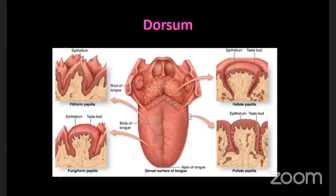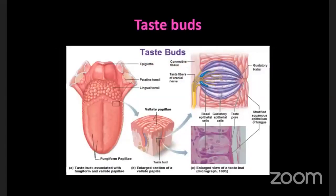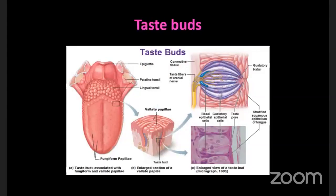Among these papillae, the filiform papillae form the most numerous type. These papillae contain a very special structure called taste buds, which are responsible for taste sensation - otherwise called gustation. So these papillae are mainly meant for taste sensation.